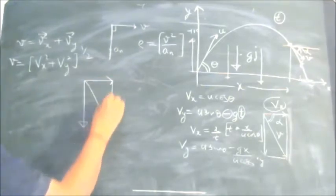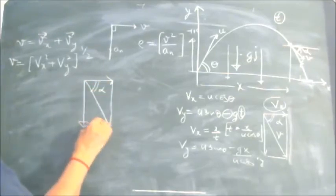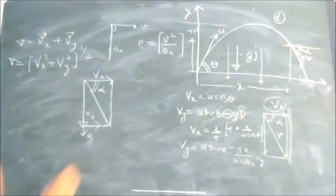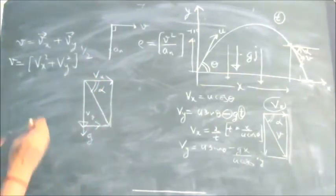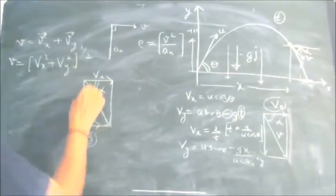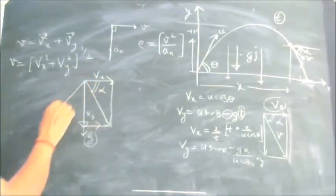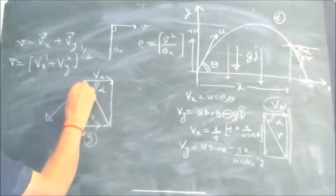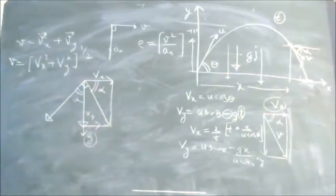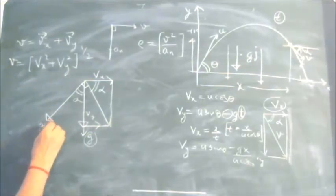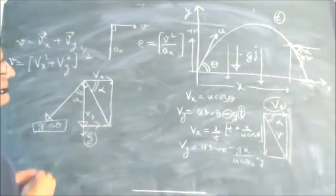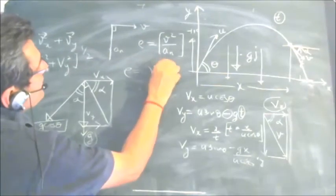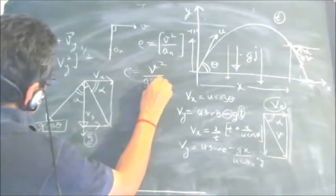Now, the velocity v is at angle alpha with the horizontal, with components vx and vy. The acceleration g is acting downward. We need the component of this acceleration which is normal to the velocity. Since this angle is alpha, the normal component of g is g·cosα. So our relationship now becomes: ρ equals v² upon g·cosα.